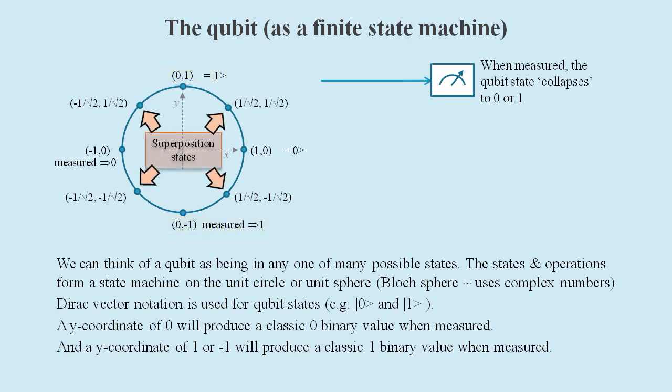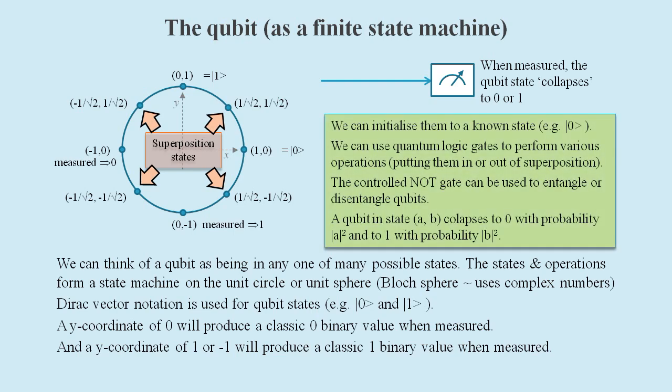The other four states have plus or minus one over the square root of two as their x and y coordinates, and these are called superposition states. And there is an equal probability that these states will collapse to a zero or a one when measured.